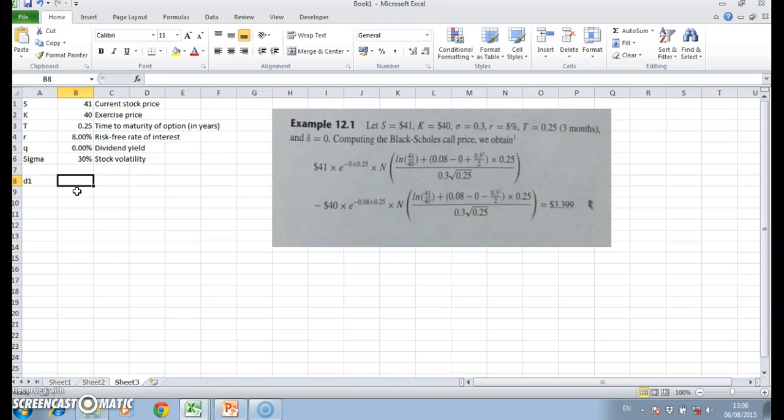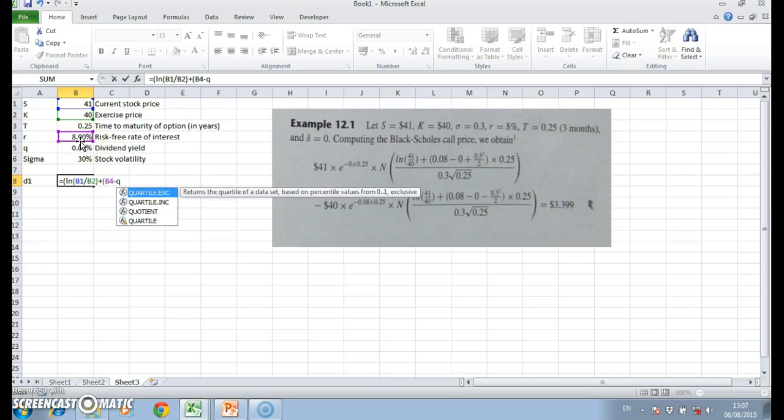First of all, we need to calculate d1, which is equal to, following in line with the representation given here for Black-Scholes. d1 would be equal to: open brackets, natural logarithm, open brackets, S divided by K, close brackets, plus r negative q (q being the dividend yield which happens to be 0%), plus sigma squared, so open brackets, sigma squared to the power of 2 divided by 2, close brackets, multiplied by t (t being the maturity), and we close brackets.